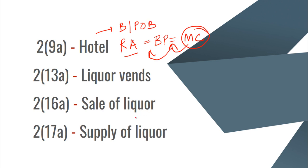Next, Section 2 subsection 30a adds the definition of liquor vents. Liquor vents are retail shops — not wholesale shops — that have a license to sell liquor. The important thing to remember about this definition is what it does NOT include: it does not include hotels, and it does not include common drinking houses. They often ask what this definition excludes.